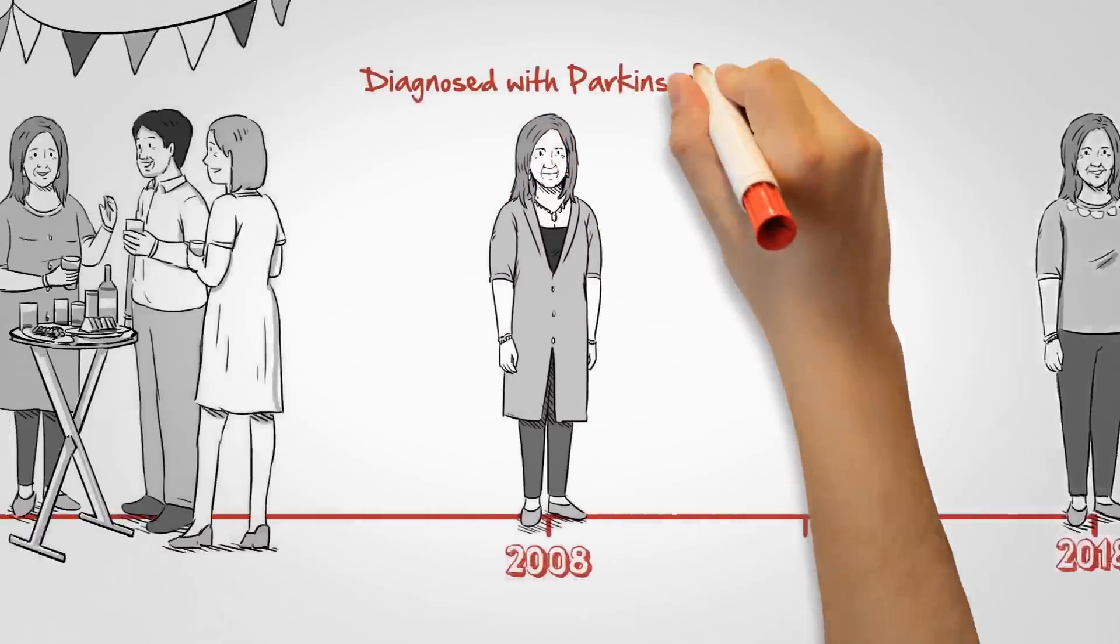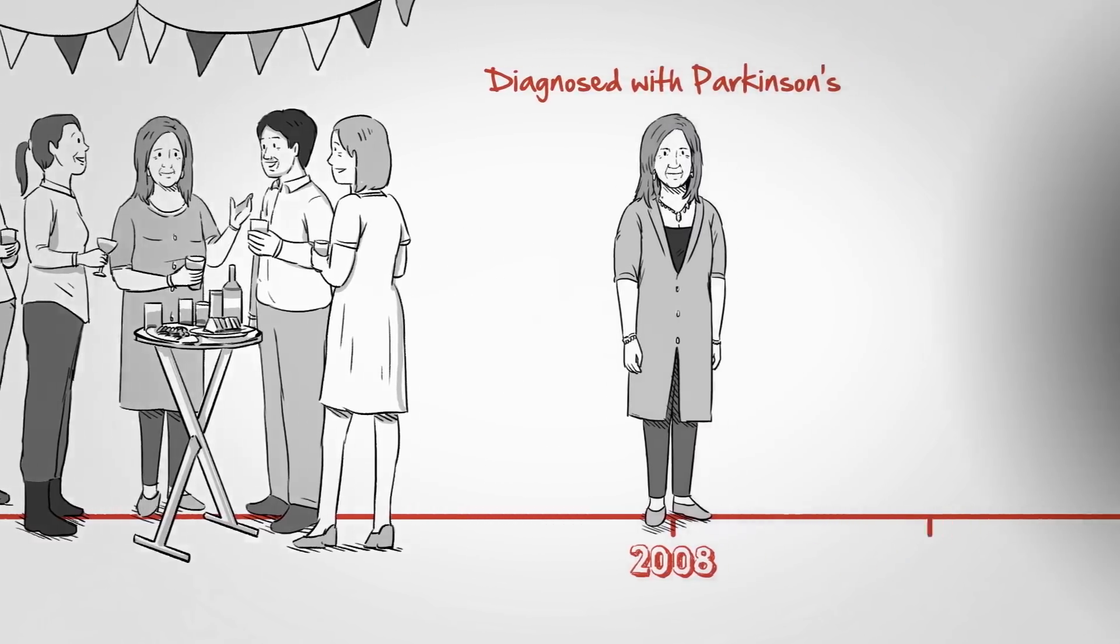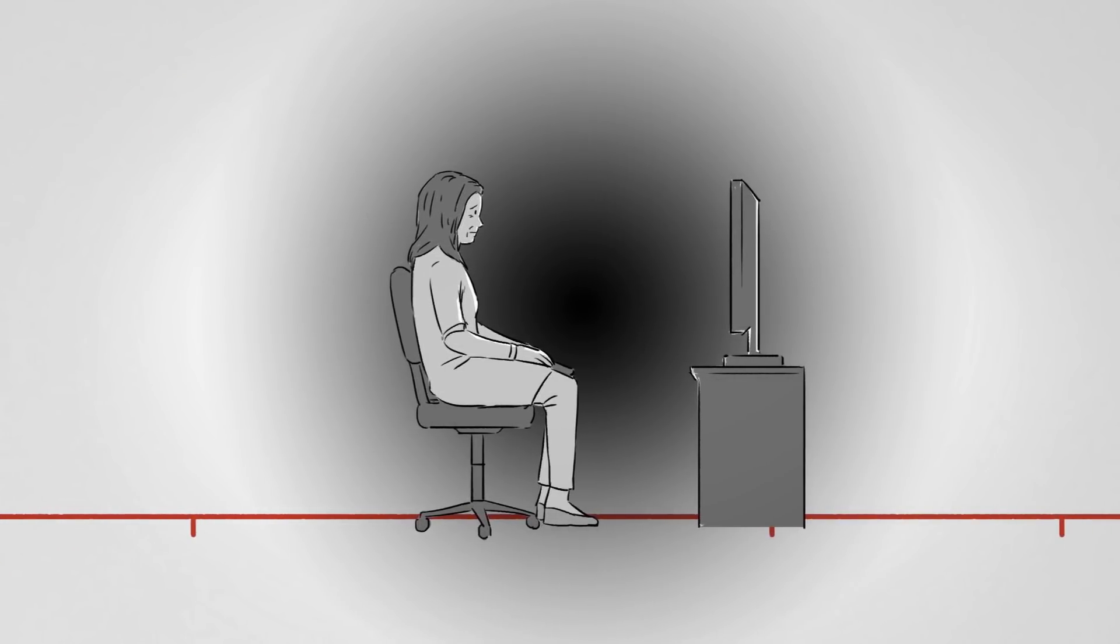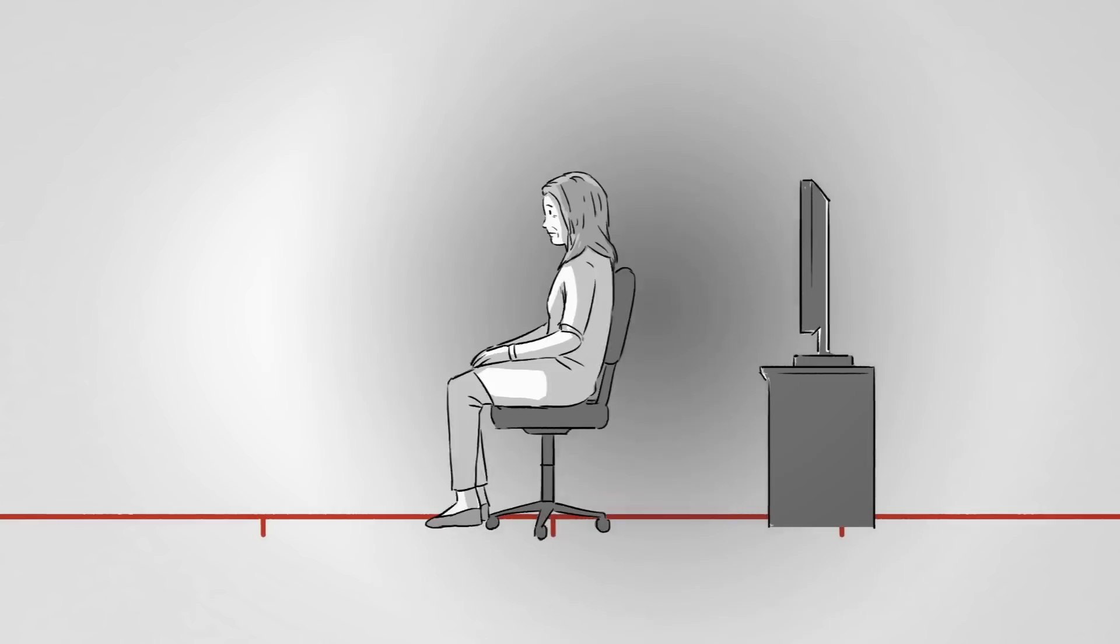Before Parkinson's disease, I was living the life, single and dating. I had a lot of friends and a great job. But after diagnosis, I didn't know what in the world I was going to do with the rest of my life. I became more isolated and I stopped exercising. I soon realized I needed a change of direction.